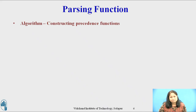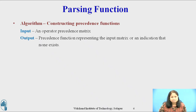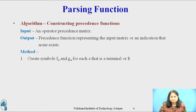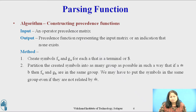Consider the algorithm for constructing the precedence function. Input: an operator precedence matrix. Output: precedence functions representing the input matrix, or an indication that none exist. Method — Step 1: create symbols f(a) and g(a) for each terminal or dollar symbol. Step 2: partition the created symbols into as many groups as possible such that if a has the same precedence as b, then f(a) and g(b) are in the same group.